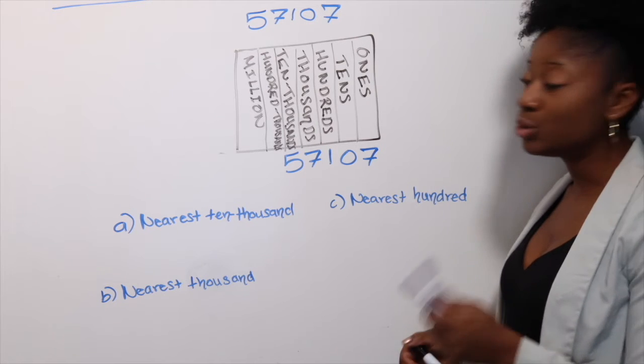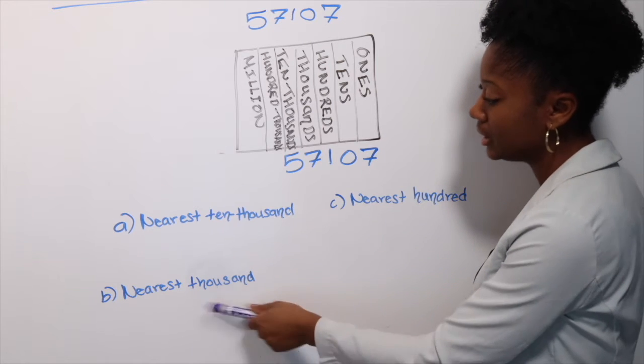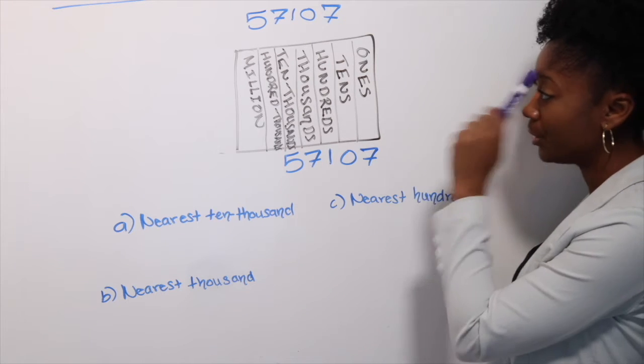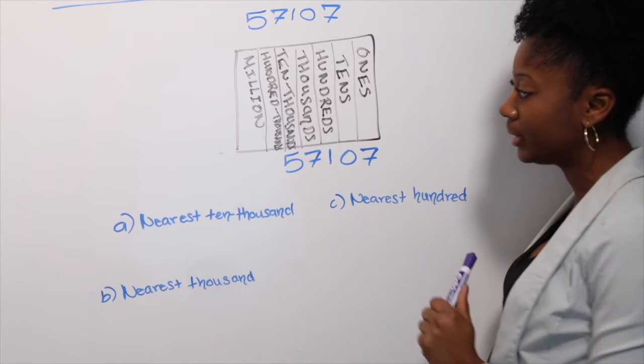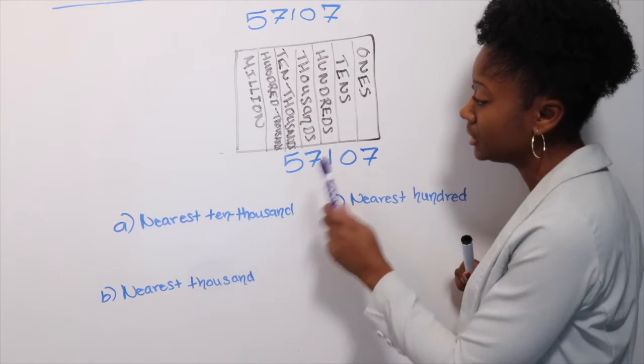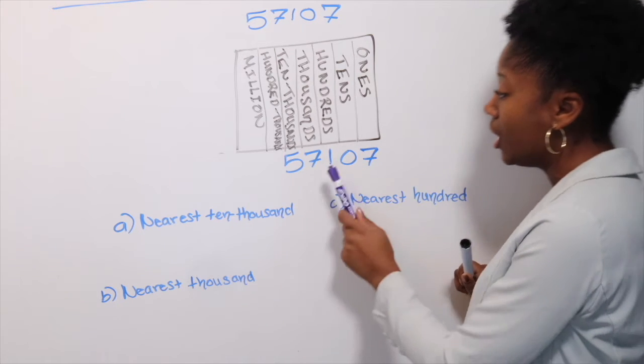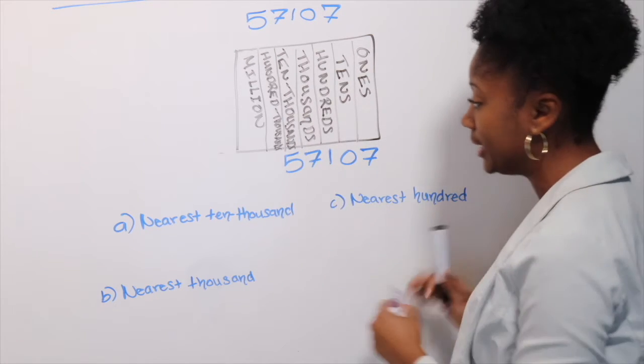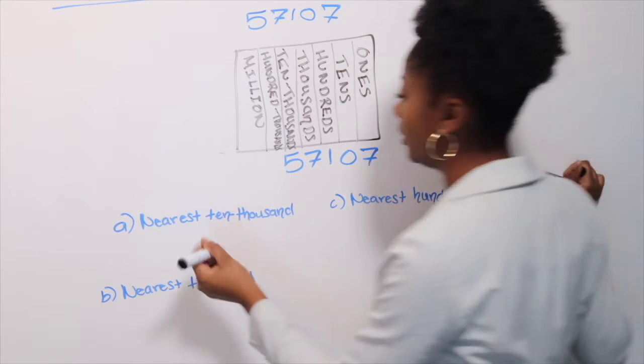Okay guys, so for each one, it's telling us to round to the nearest 10,000, 1,000, and 100. And just to help out our brain, it's always easier to just draw the place value so you know which number is in the place of the 10,000, which number is in place of 1,000, which number is in the place of 100. You do not need to draw this. If you're good, then you're good.